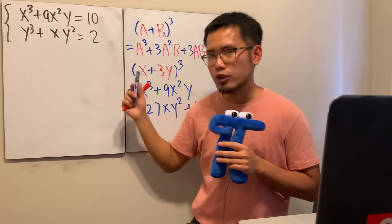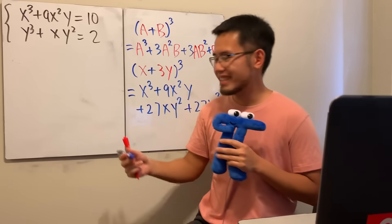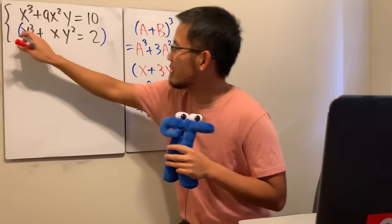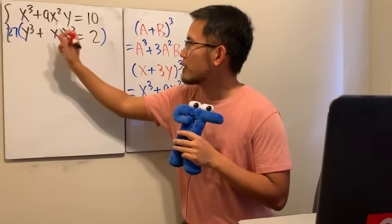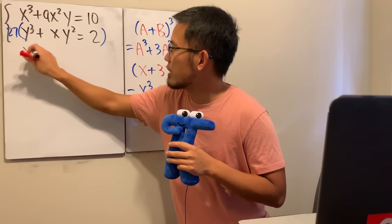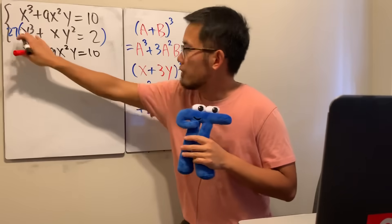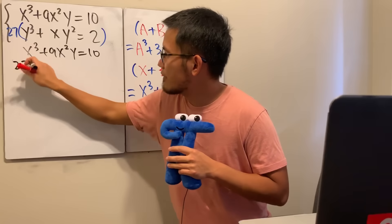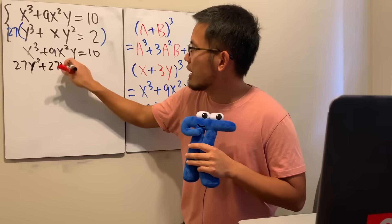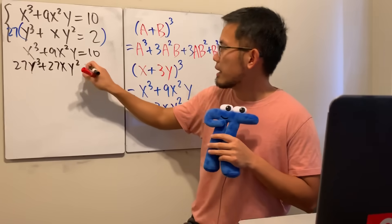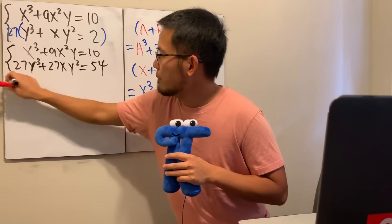If we multiply the second equation by 27, we can complete the cube — how cool is that! So multiplying everything by 27, the first equation stays: x³ + 9x²y = 10. For the second equation we get 27y³ + 27xy² = 54.